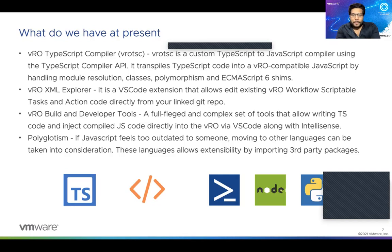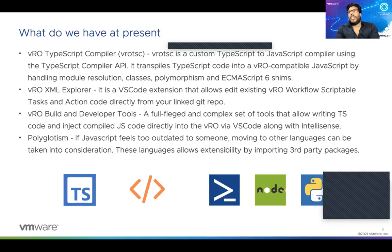We also have the VRO XML Explorer, which simplifies the process of converting that VRO proprietary XML into plain code. This tool is available and we can use it. There is one more tool — again, the PSCOE team developed the build-and-developer tool, which is a fully integrated, complex set of tools that gets the job done. You write the code in TypeScript, which is a superset of JavaScript, so any code written in JavaScript will work in TypeScript as well.